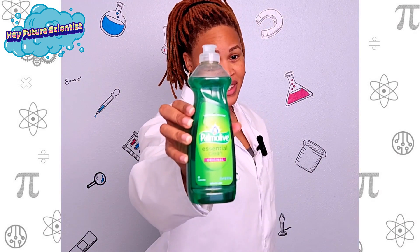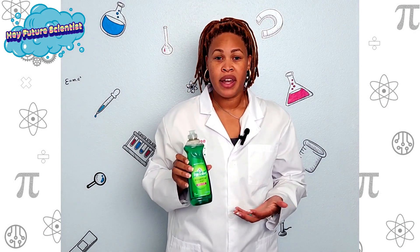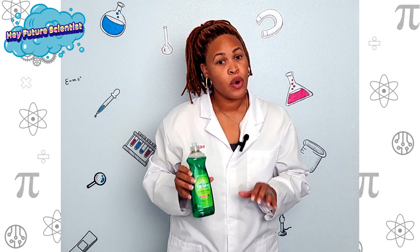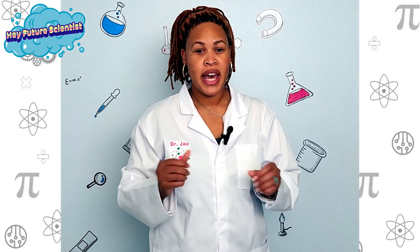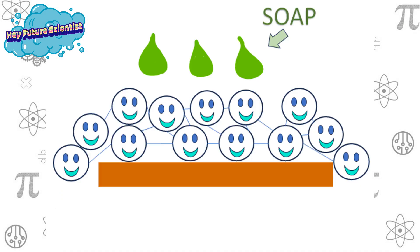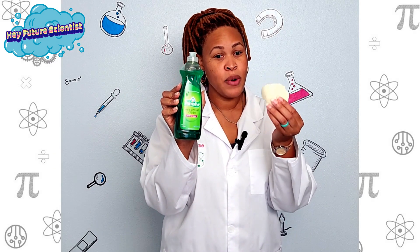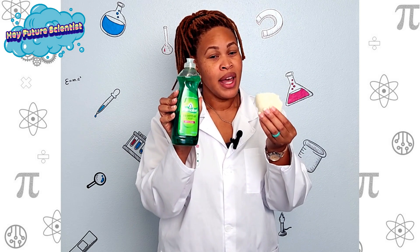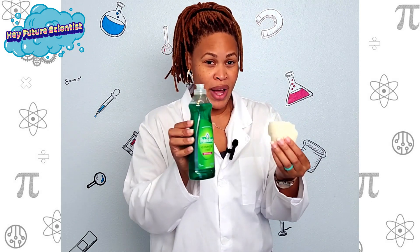But soap is a surfactant, and a surfactant is something that reduces or lowers the surface tension of liquids. When a drop of soap is added to the milk, the surface tension lowers, and now the fat and the protein can move about more freely. The soap interacts with the fat and the protein in the milk, and this causes the milk and the dye to move around.